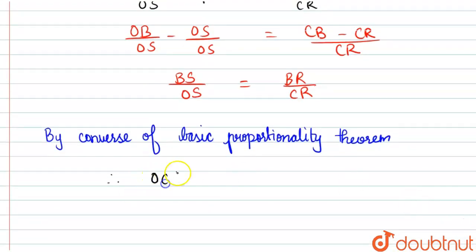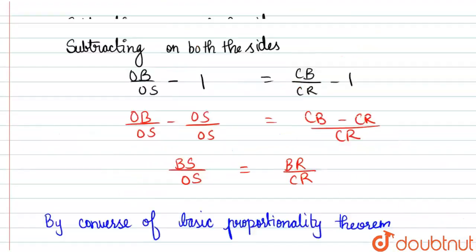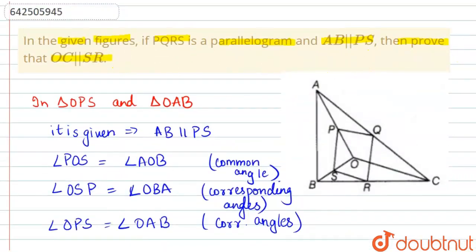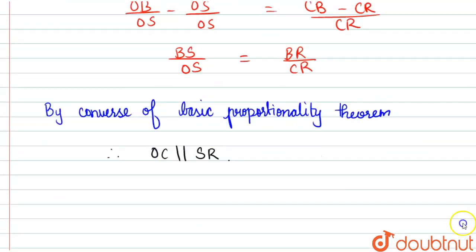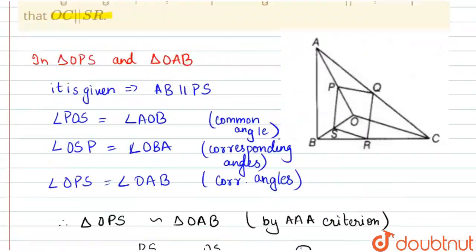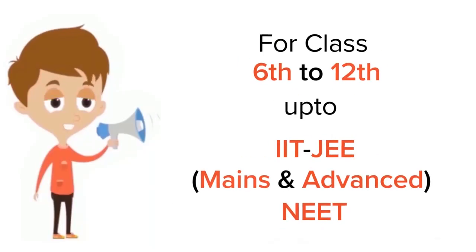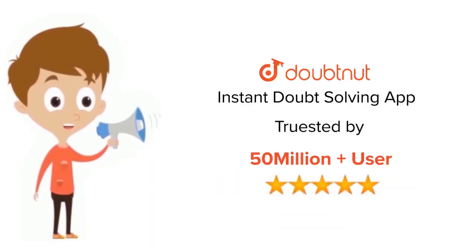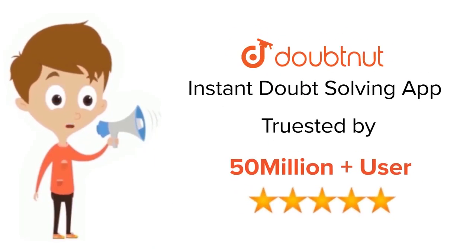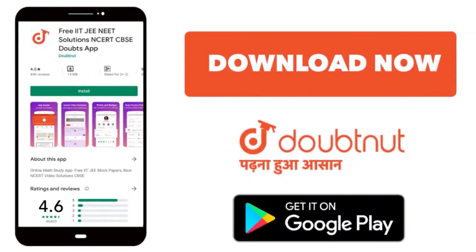Therefore OC is parallel to SR — which is what was asked. Hence proved. I hope you understood this explanation. Thank you. For class 6–12, IIT JEE, and NEET level, trusted by more than five crore students — download DoubtNut today.